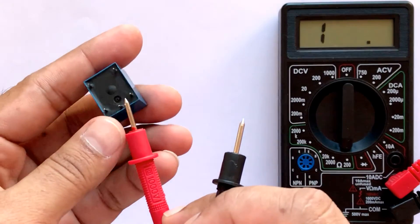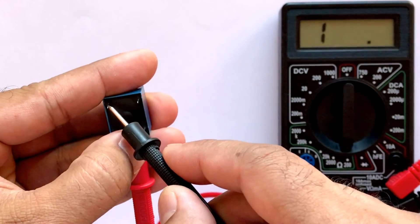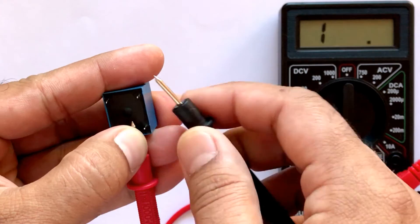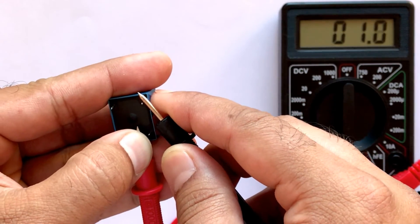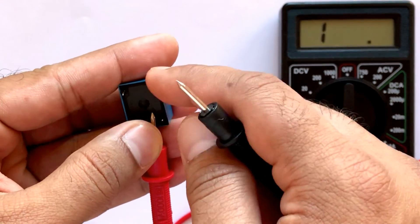Now, connect one of the multimeter's probes to the pin in between the coils. Then connect the other probe one by one to the remaining two pins. Only one of the pins will complete the circuit and will show activity on the multimeter.